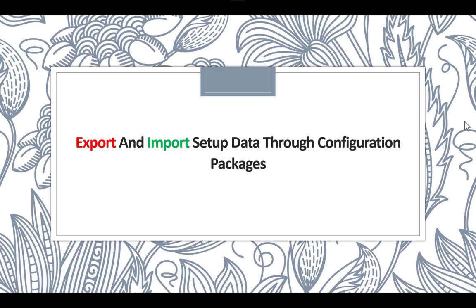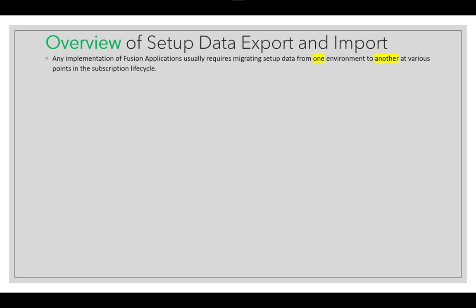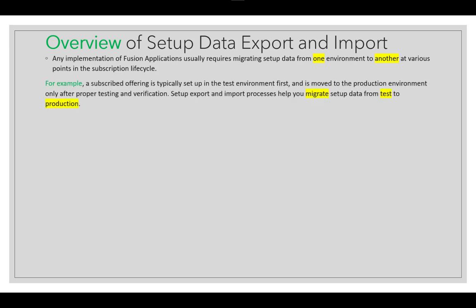Welcome to this video on how to export and import setup data through configuration packages. Any implementation of Oracle Fusion Applications usually requires migrating setup data from one environment to another — either from gold to test instance, then from test to production. For example, a subscribed offering is typically set up in test first, then moved to production after proper testing and verification.